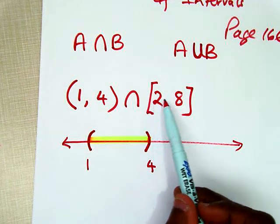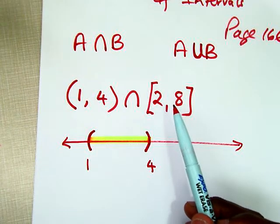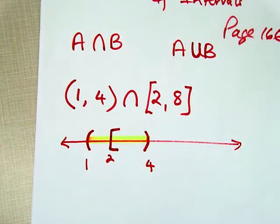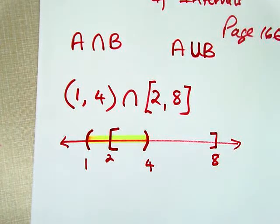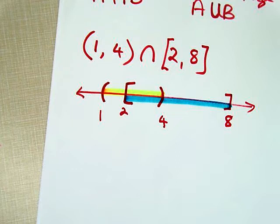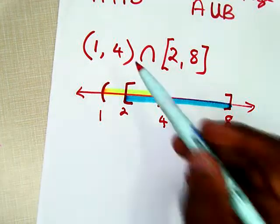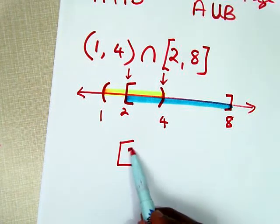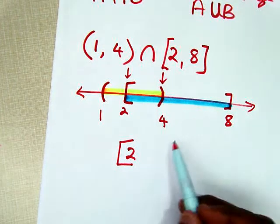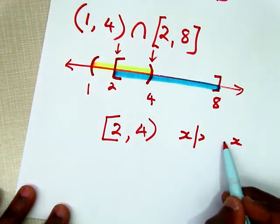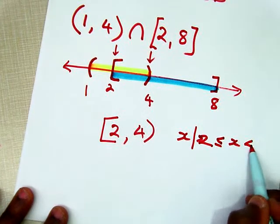The other set is greater than or equal to 2 and less than or equal to 8. I'm going to start at 2 and use a square bracket, which means 2 is included, and go all the way up to 8. The solution set for that section is between 2 and 8. So the intersection is where these two graphs overlap. Right between here and here is where they overlap — it starts at 2 and ends at 4.